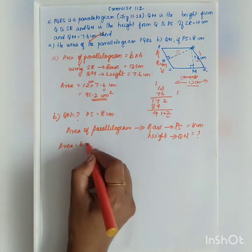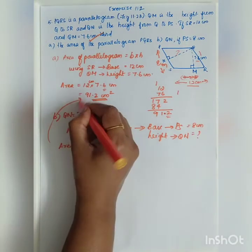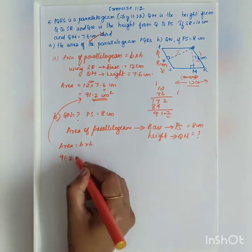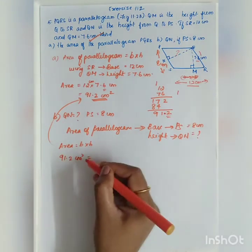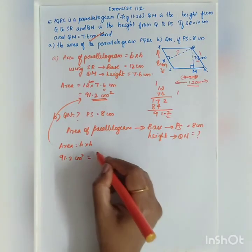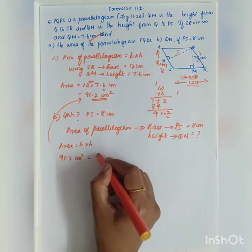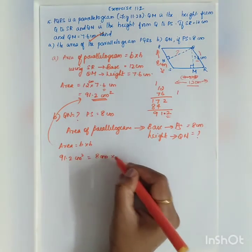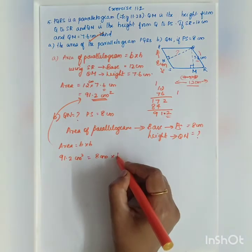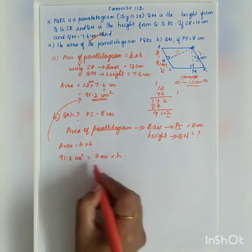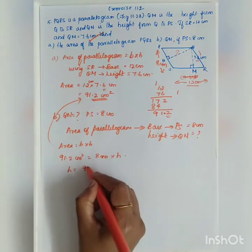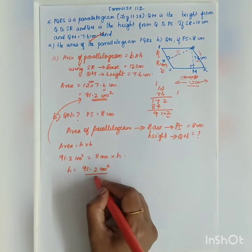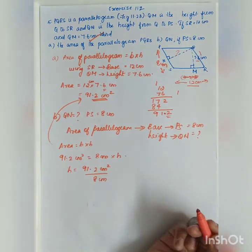What will be your area of the parallelogram? Area is equal to base into height. Area already you have found out. So it is 91.2 cm squared is equal to base PS, 8 cm into height. What will be your height? It will be equal to 91.2 cm squared divided by 8 cm.